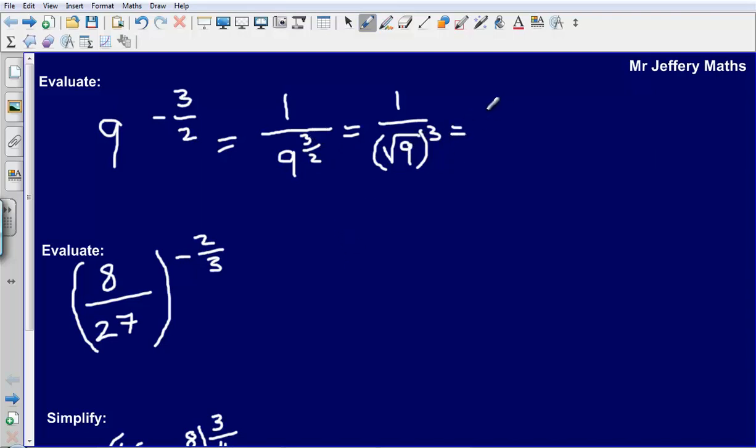So when we evaluate this, well that gives us 1 over, so the square root of 9 is simply 3 and so we are cubing 3. 1 over 3 cubed is the same as 1 over 27. So the final answer there would be 1 over 27.